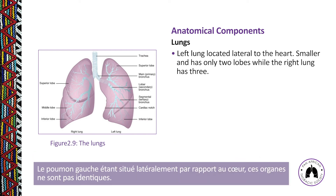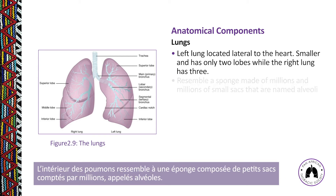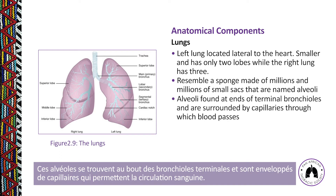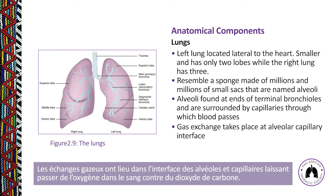Because the left lung is located lateral to the heart, the two lungs are not identical. The left lung is smaller and has only two lobes, while the right lung has three. Inside, the lungs resemble a sponge made of millions of small sacs called alveoli. These are found at the ends of terminal bronchioles and are surrounded by capillaries through which blood passes, where gas exchange allows oxygen entry into the blood in exchange for carbon dioxide.